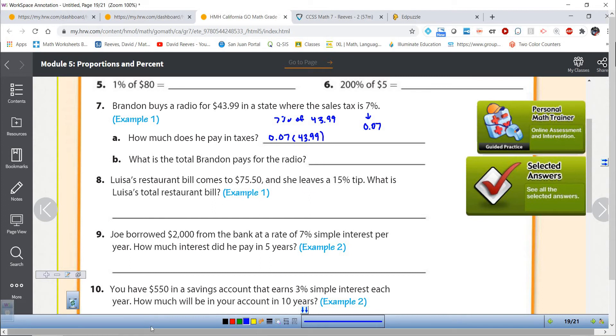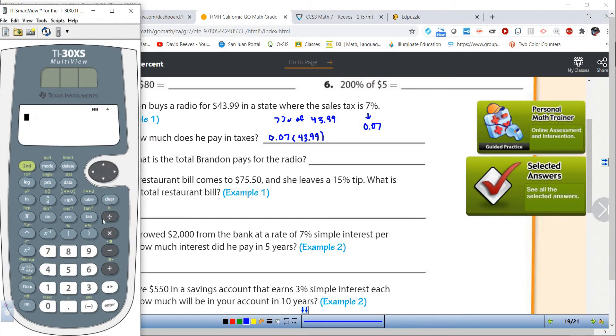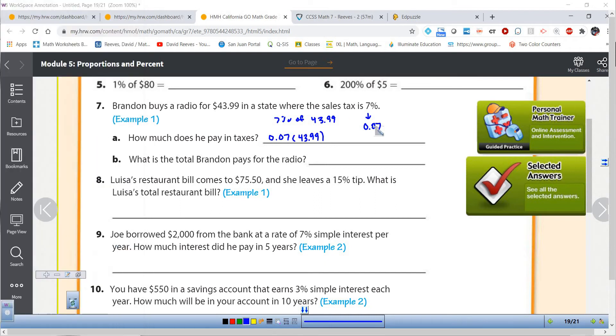And then we're going to take 0.07 because we're going to find 7% of $43.99. That's what we need to do, and that's why we're doing those problems up there, so we knew what to do. I'm going to pull up my handy dandy calculator and do 0.07 times 43.99. And when I do that, I get 3.0793. Now remember, this is money, so we need to go two decimal places, and this is going to round up to $3.08.